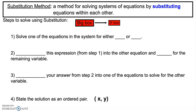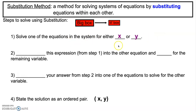Let's talk about what the substitution method is. It's going to be a method for solving systems of equations by substituting equations within each other. We're going to follow these steps as we do each problem. The first step is to solve one of the equations in the system for either x or y. Notice the big box and little box — we're going to use those as an organizational tool so we know what we're substituting where, and step one gives us what our big box is.